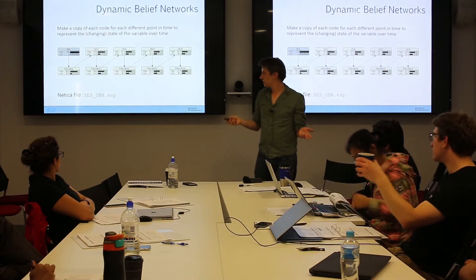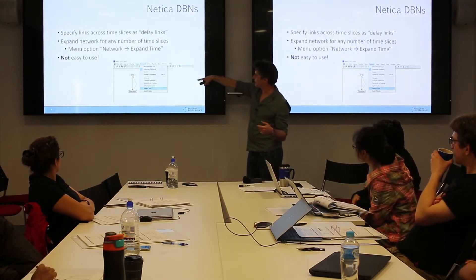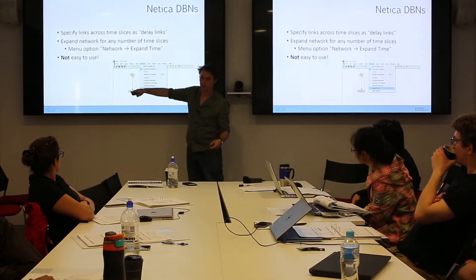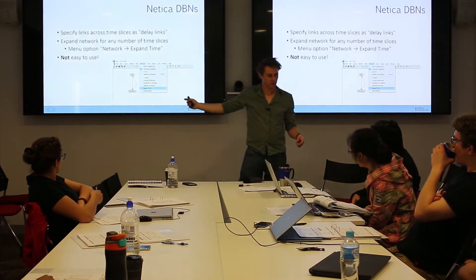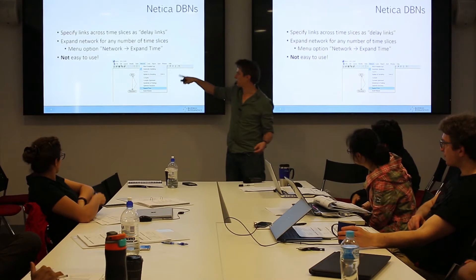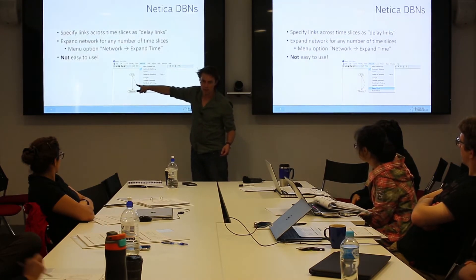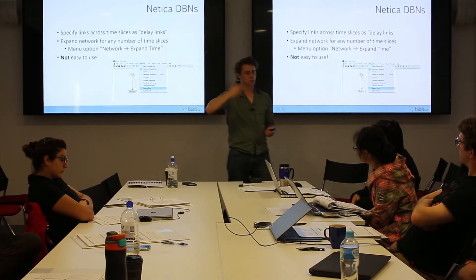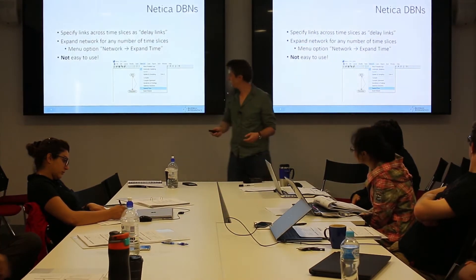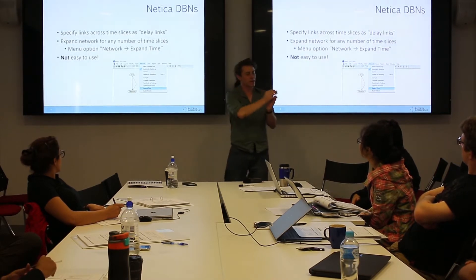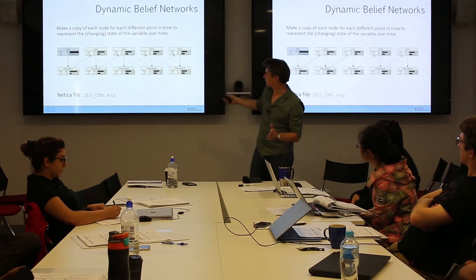This is a common enough pattern that the tools have special support for it. In Netica, I create a network with two nodes for socio-economic status and education, create two links between them, and Netica will tell you there's a feedback loop when you try to compile it. But before compiling, you can grab one of those links and specify it as a delay link, putting a temporal delay on it — you can see this one here that's shown in red.